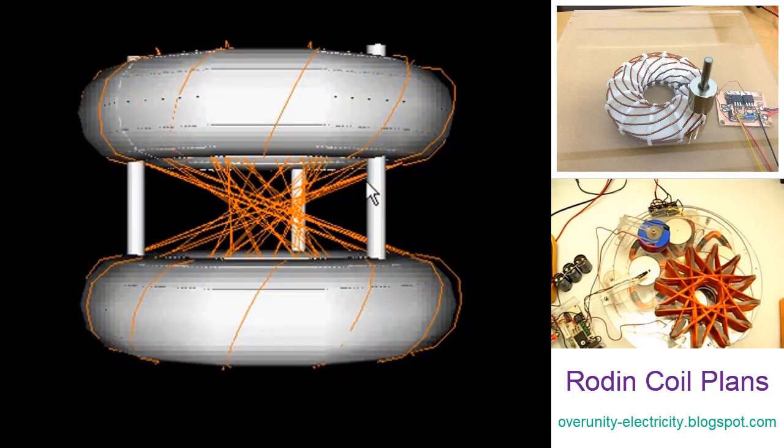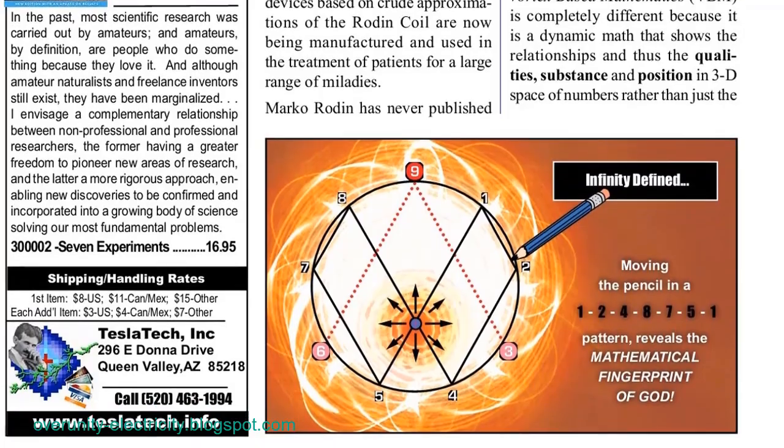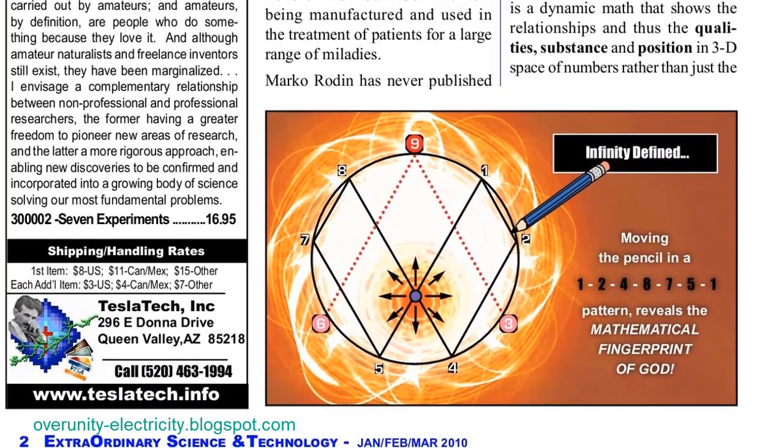These numerical patterns, found on the surface and within the internal volume of a torus, have been rigorously tested, confirmed, and validated by leading mathematicians, computer scientists, and scientific thinkers, collectively known as the Rodin Solution.